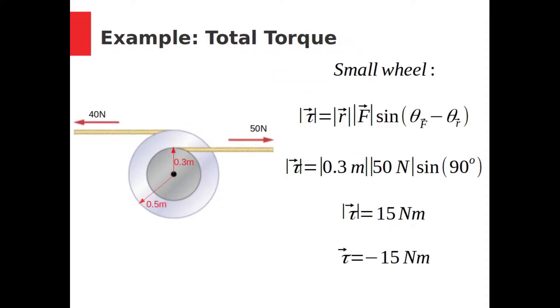In this image, we see two wheels that share a common axle. Each has a rope strung around it. The smaller wheel has a radius of 0.3 meters, and its rope is pulling on it with a force of 40 newtons. What is the overall torque?